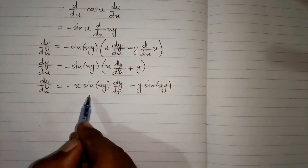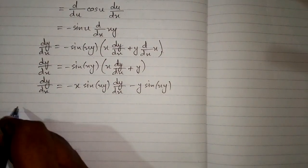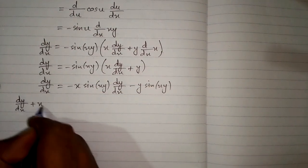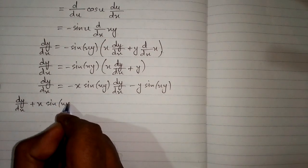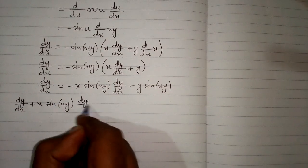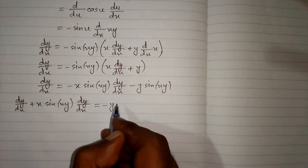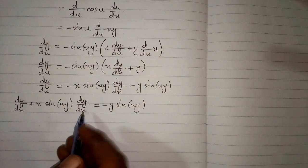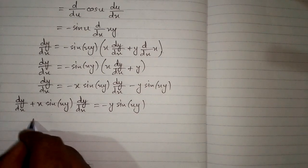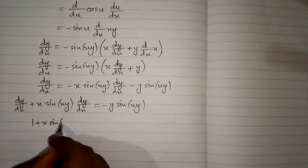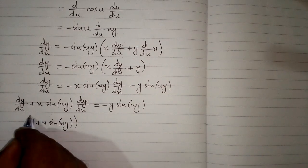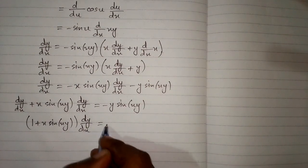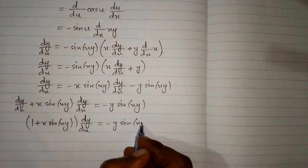Now we take this term to the other side of the equation, so we have dy/dx plus x times sine(xy) times dy/dx = minus y times sine(xy). We can now take dy/dx as a common factor, giving us (1 + x·sine(xy)) times dy/dx = minus y times sine(xy).